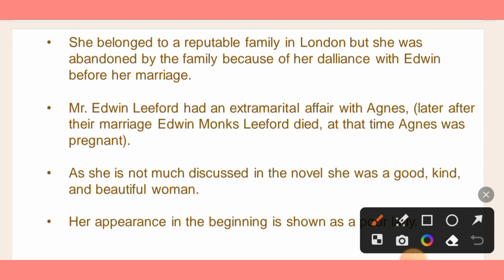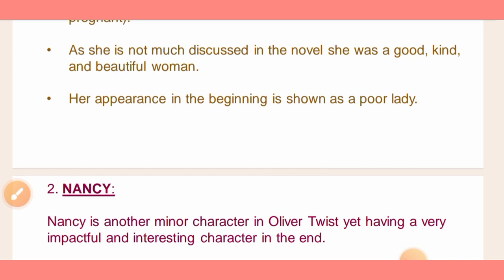Agnes had a physical relationship with Edwin — whose full name is Mr. Edwin Monks Leiford — before her marriage. This is the reason why her family abandoned her. Edwin was already married, so Agnes Fleming had an extra-marital affair with him. When Agnes was pregnant, she died giving birth to Oliver. According to the representation of Agnes, she was a beautiful woman, and her character gives Oliver the foundation of his true identity.